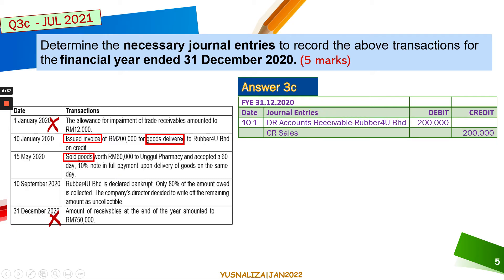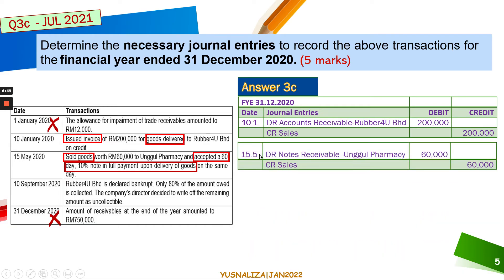On 10th of January, an invoice was issued for goods delivered on credit. The journal entry is: debit Accounts Receivable – Rabel $200,000 and credit Sales Revenue $200,000. That was a credit sale. Next, on 15th of May, goods were sold on credit to Unggul Pharmacy and a 60-day note was accepted. That gives rise to notes receivable of $60,000 — not accounts receivable.